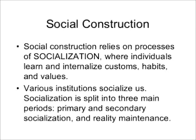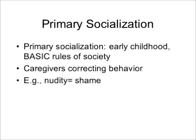Primary socialization occurs in early childhood. This is when children learn the very basic rules of society, and they tend to learn these rules from their caregivers. A caregiver, if they see a child doing something inappropriate, will say 'don't,' and might work to shame the child to teach them what is basic and appropriate behavior. For instance, there comes an age where a little boy or girl can't just run around in public in the nude — a caregiver will say, 'honey, no, you need to put some clothes on.'